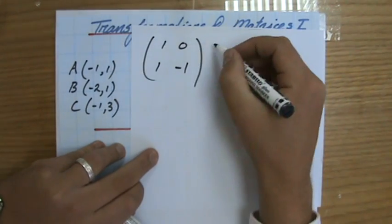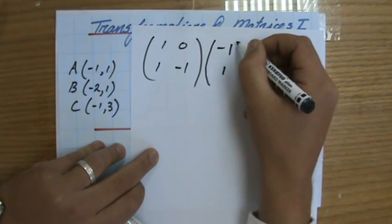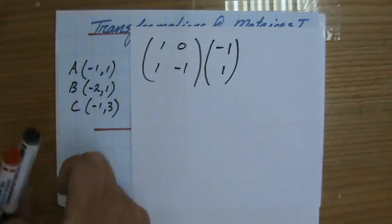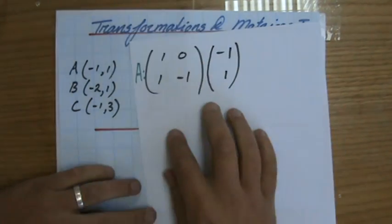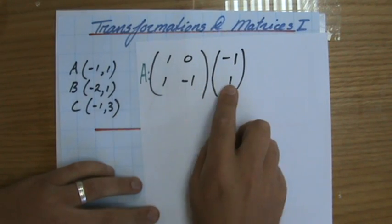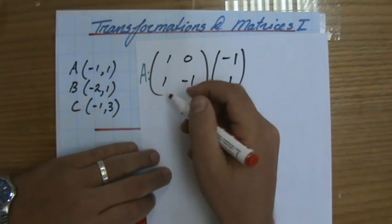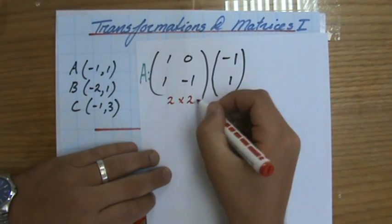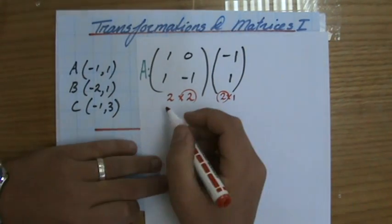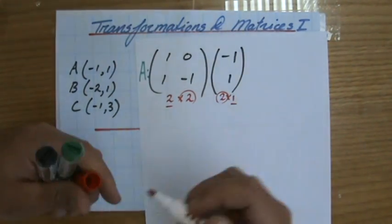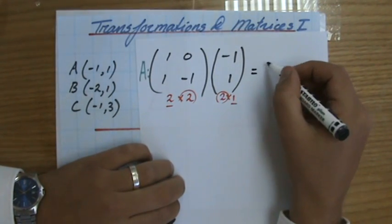And the coordinates, I'm going to write as a column like this: minus 1, 1. So this is for coordinate A. I first write down the matrix and then the coordinate as a column vector. This is a 2x2 matrix, and this is a 2x1 matrix. So indeed I can multiply it, and my answer will be of order 2x1. That is a check you always perform when you're multiplying matrices.